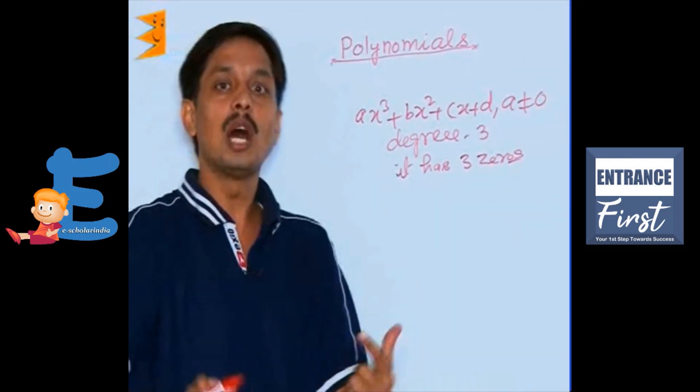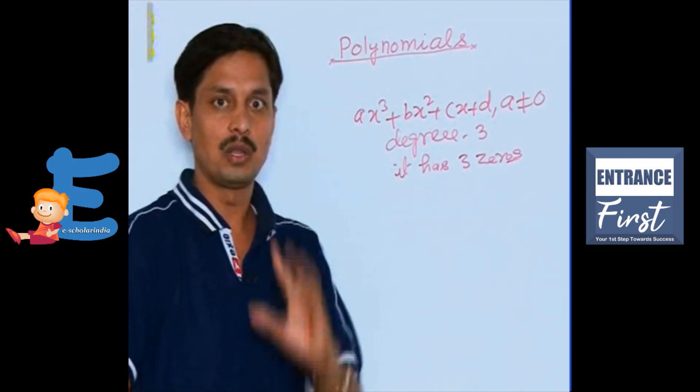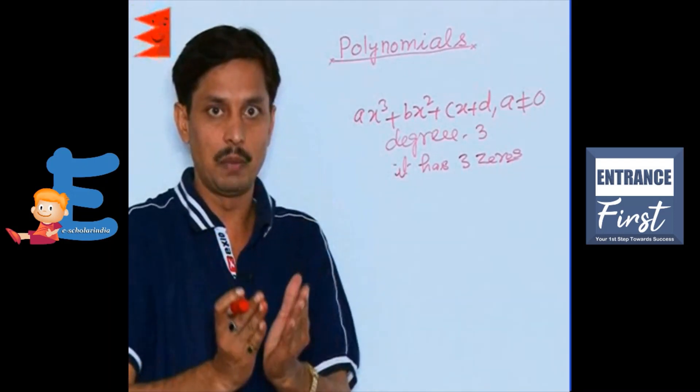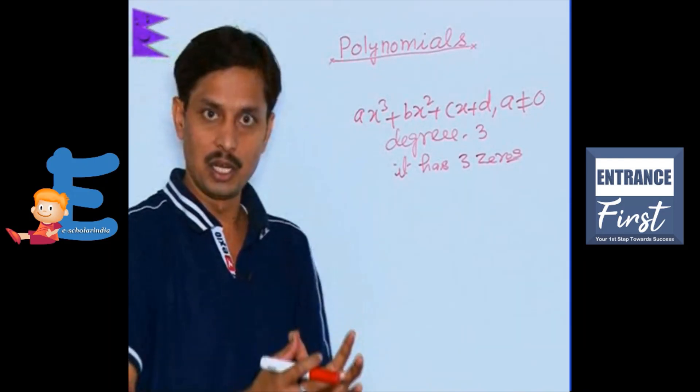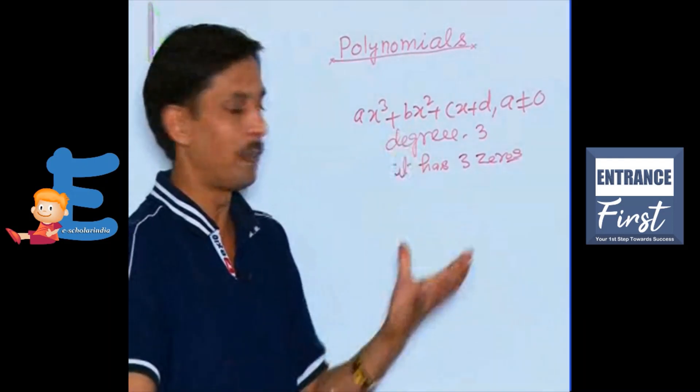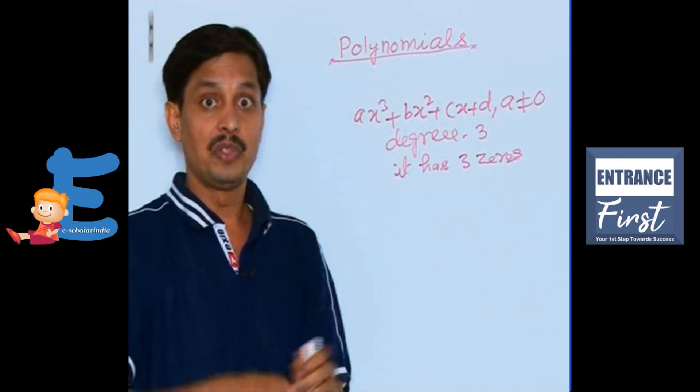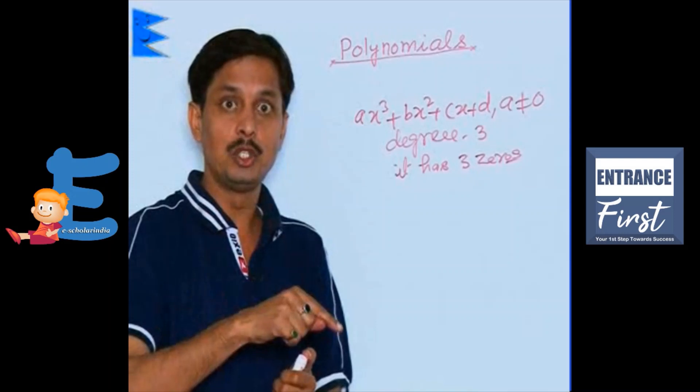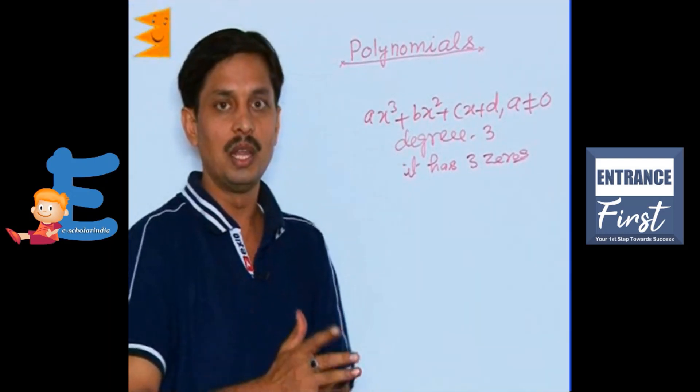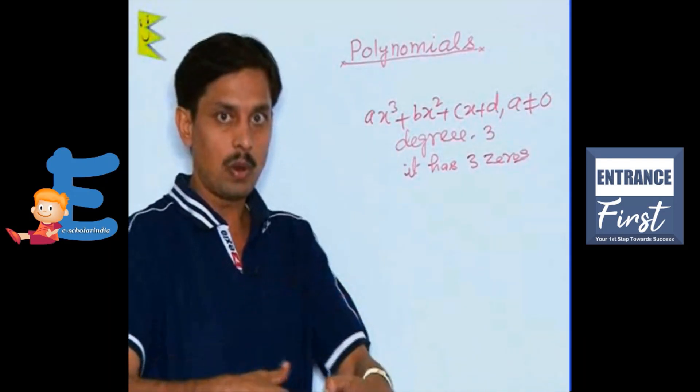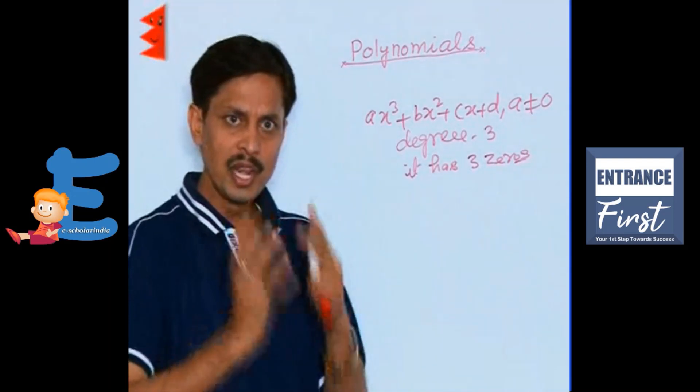If I ask you how to calculate, the method is that first of all the first zero will be obtained by using remainder factor theorem. We can apply the remainder theorem, factor theorem concept to obtain the first zero, and then with the help of that zero we divide and obtain a quadratic polynomial, and then 2 more zeros of the obtained quadratic polynomial can be found.